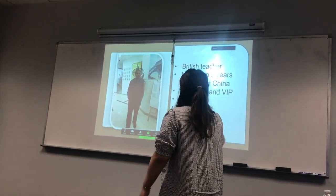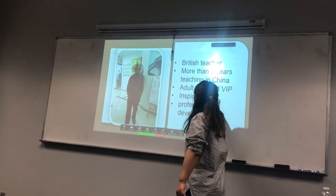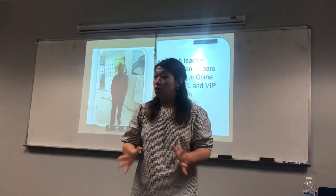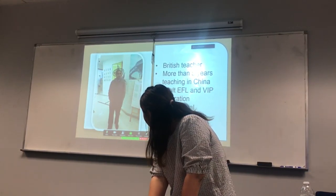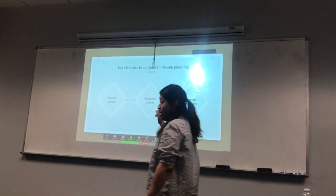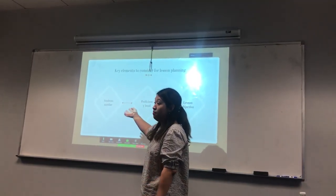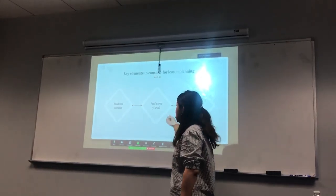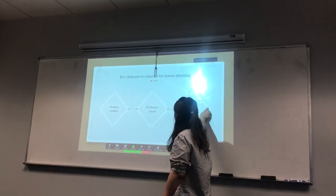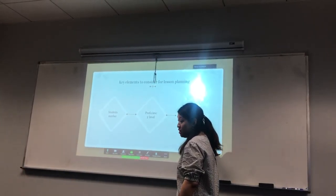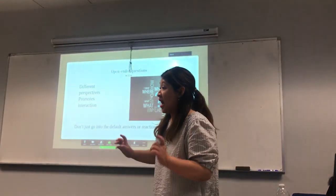Now let's move on to teacher number two. He is a British teacher with five years of teaching experience in China, working with adult EFL and VIP lessons. This teacher is big on inspiration and professional development. When he prepares a lesson, the first thing he looks at is student number — how many students there are will determine which activities can be done in the classroom. He then looks at student proficiency level to make sure the content and difficulty are appropriate. Most importantly, he thinks about his lesson objective — what students will be able to do — and this guides his whole lesson.